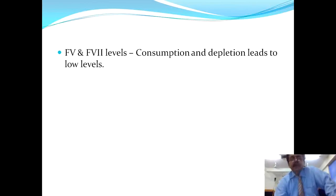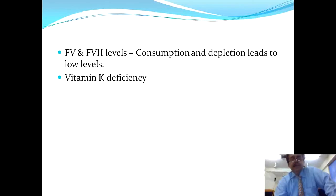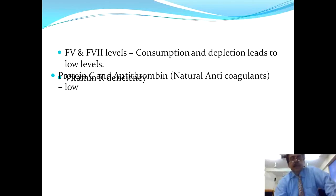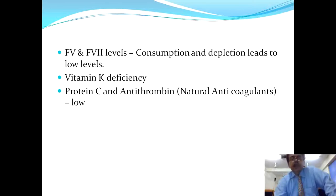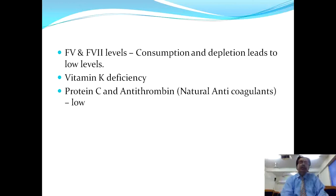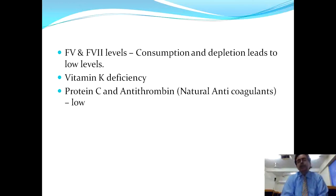Factor 8, Factor 5, and Factor 7 levels are consumed in DIC, leading to depletion — their levels will be found low. The patient will similarly have deficiency of vitamin K in DIC. Protein C and antithrombin, which are natural anticoagulants, will also be found to be low. In protein C deficiency, there is predominantly DVT formation — a type of DIC in which the patient initially presents with thrombus formation.